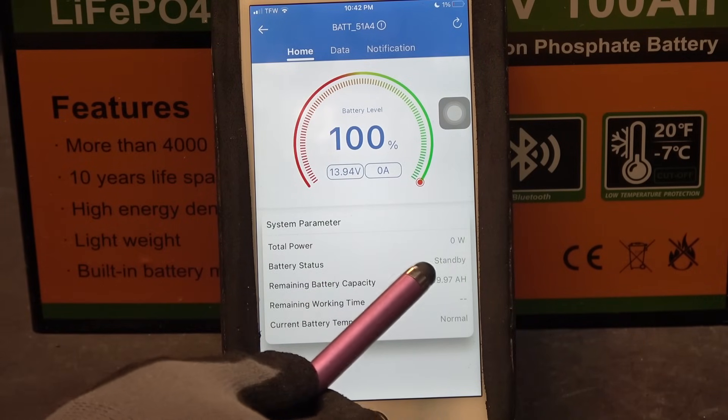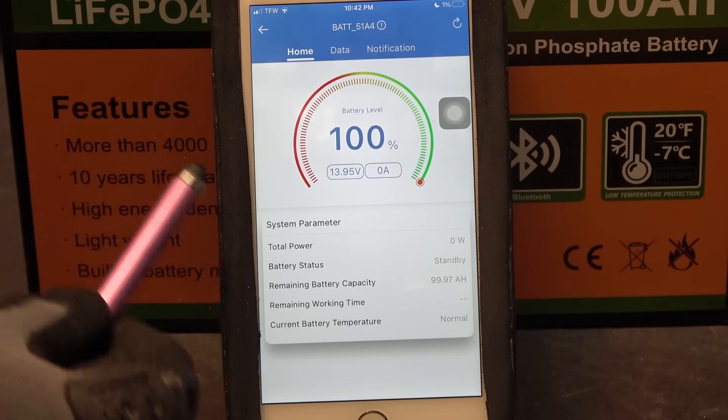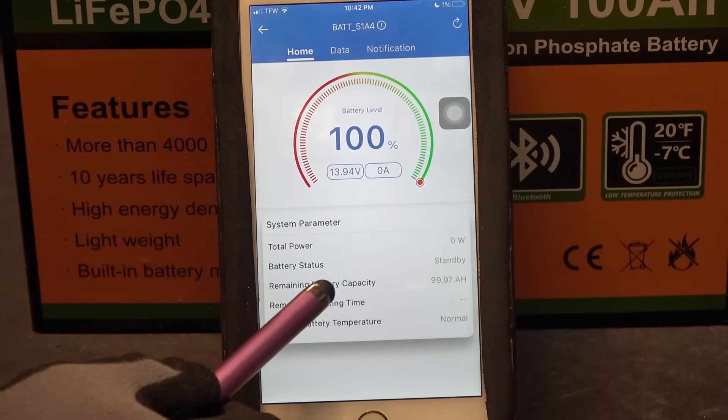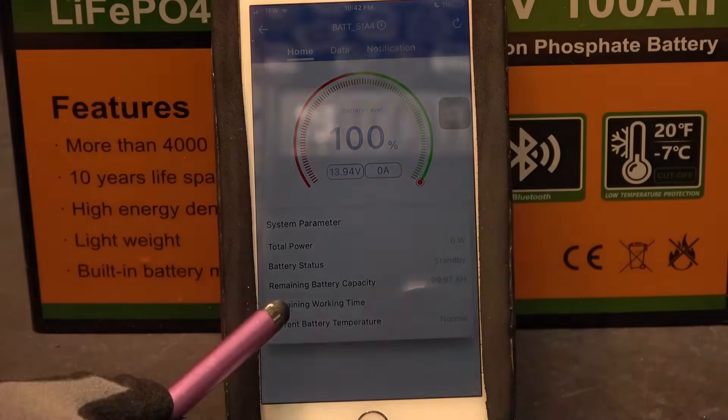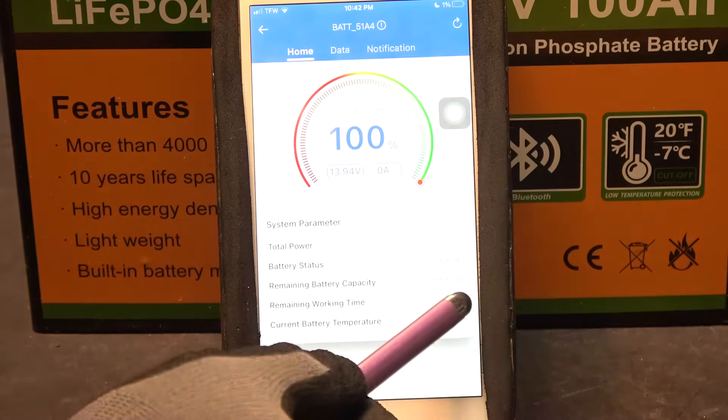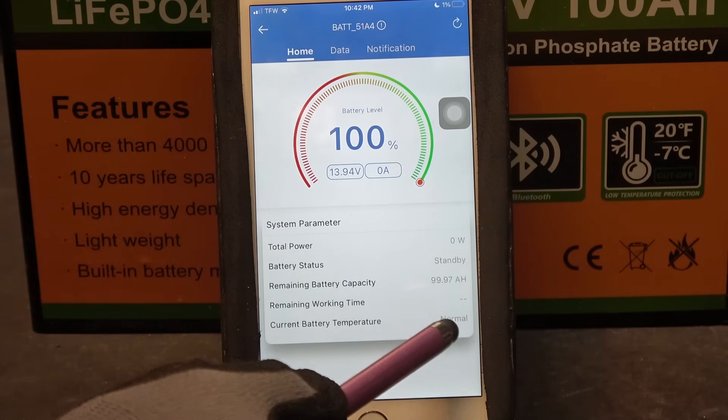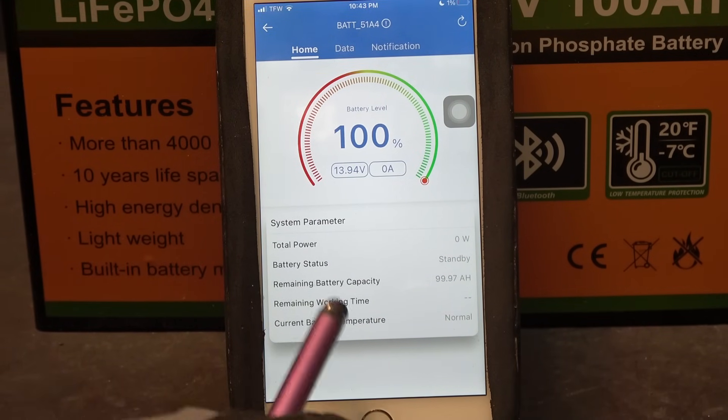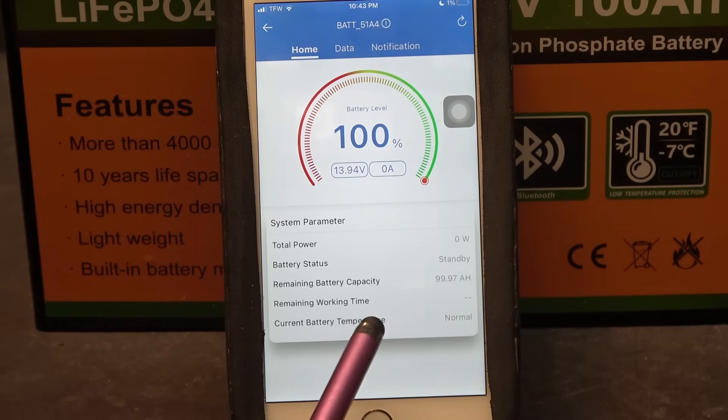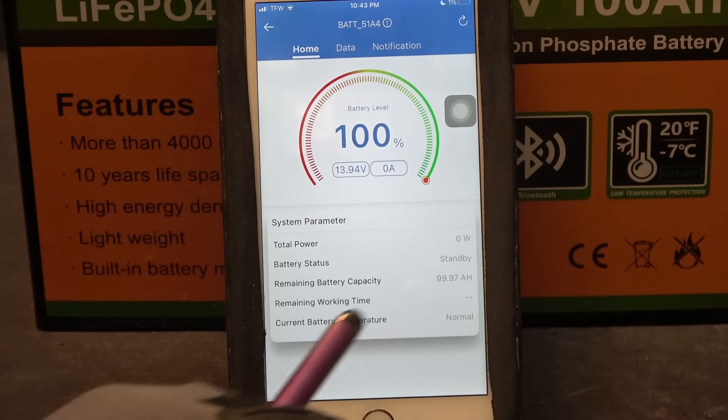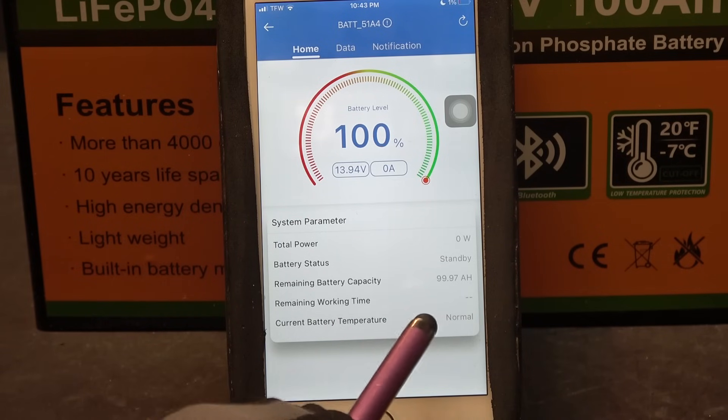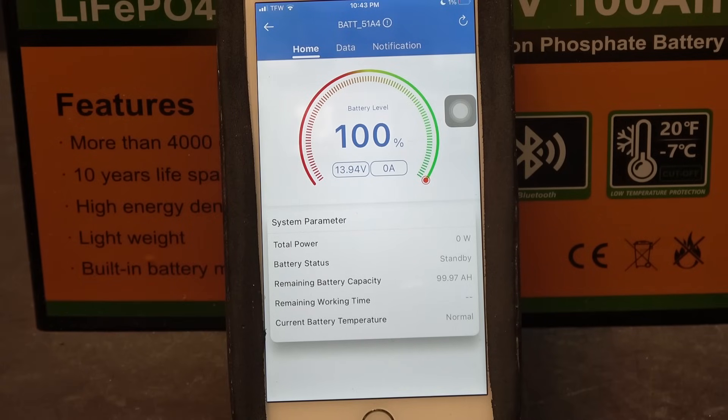Battery status, standby. That's because it's not currently hooked up to anything. Remaining battery capacity, 99.9 amp hours. Remaining working time. Current battery temperature, normal. What does it mean by normal? I would prefer some sort of temperature display here instead of normal. At least it will tell you when the battery temperature is not normal, if your battery is too cold or too hot.